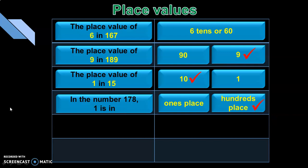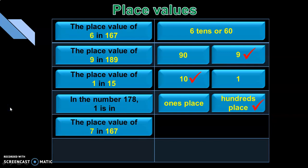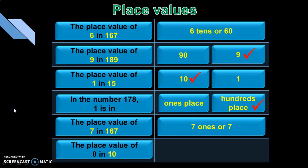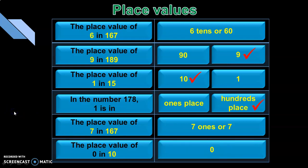Isn't it interesting to think and answer this way? Let us move on to the next question. The place value of 7 in 167 — this could be a direct question for the child to answer. What is the place value of 0 in the number 10? Does 0 have any place value? No — the number 0 does not have any value in whatever place it is present. So the answer is 0.